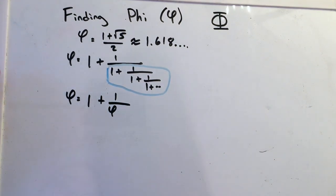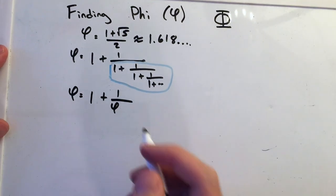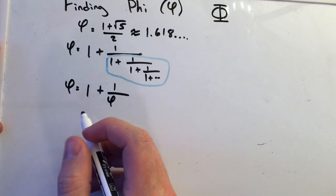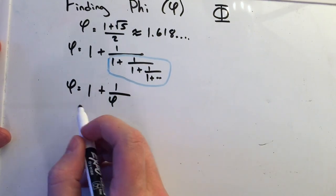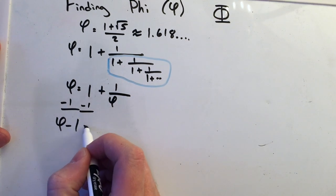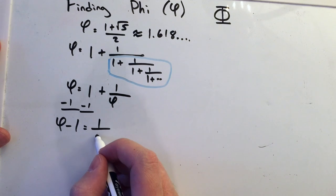And now we can solve for phi. Now to solve for phi, we have to get phi by itself. So to get phi by itself, we can subtract one from both sides. And we have phi minus one equals one over phi.